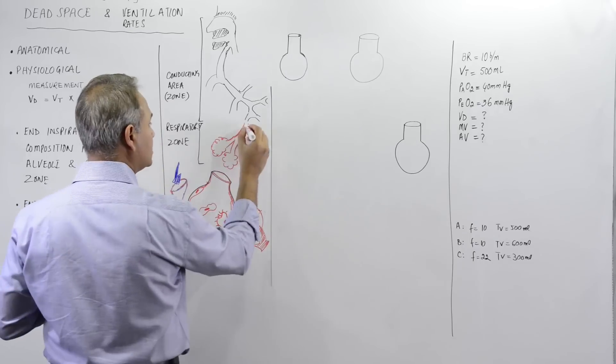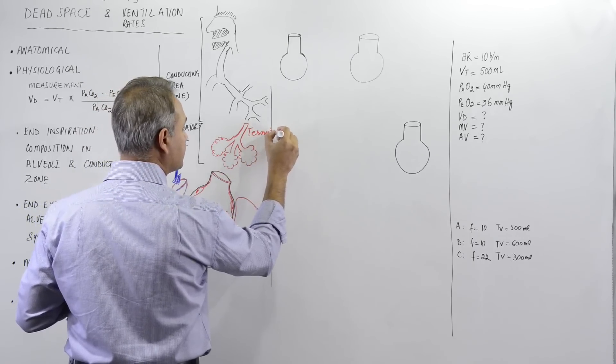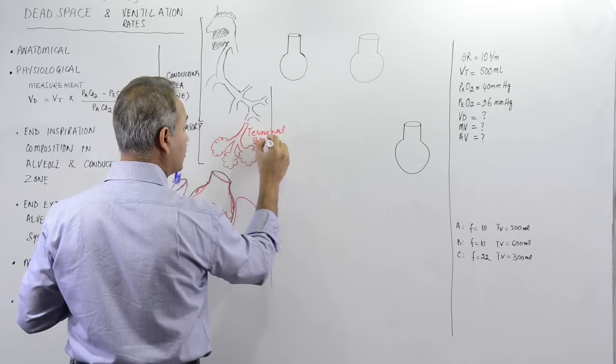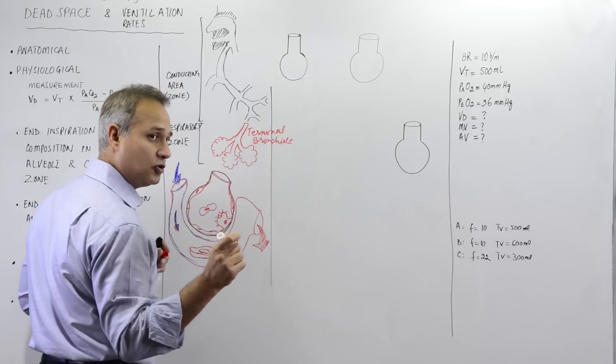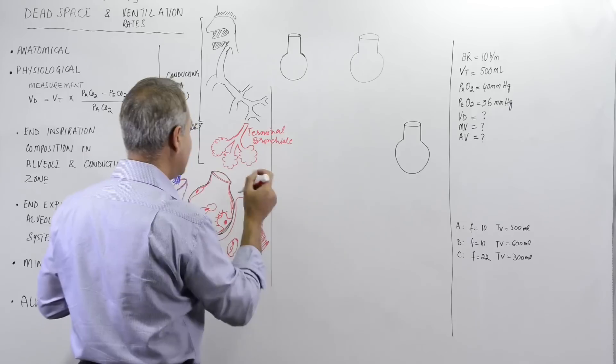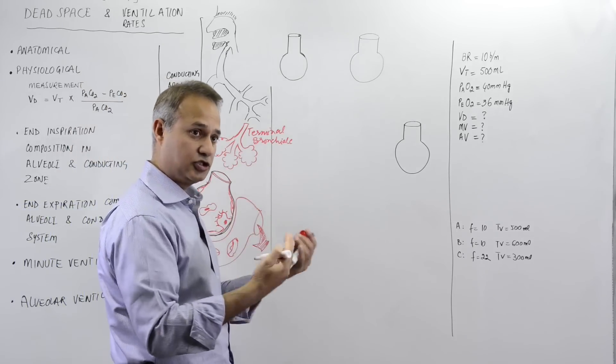This is the area which has terminal bronchioles, not bronchi. Terminal bronchioles are thin enough that they can allow the oxygen and carbon dioxide exchange to occur.